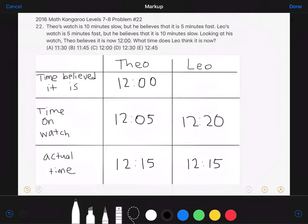Since Leo believes his watch is 10 minutes slow, if he sees the time 12:20, he will believe that the time is 12:30.